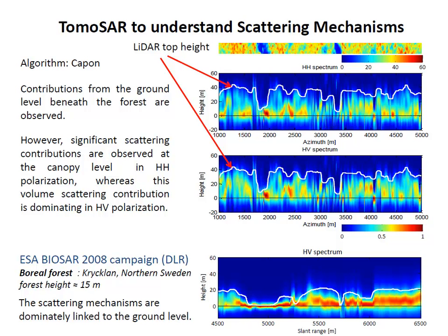In the Boreal forest, because the forest is very short, scattering is locked to the ground level only. This is clearly different from the tropical forest where we see strong volume contributions from the canopy.